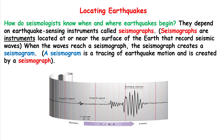Locating earthquakes: how do seismologists know when and where earthquakes begin? They depend on an earthquake-sensing instrument called a seismograph. Seismographs are instruments located at or near the surface of the Earth that record seismic waves. When the waves reach a seismograph, the seismograph creates a seismogram.